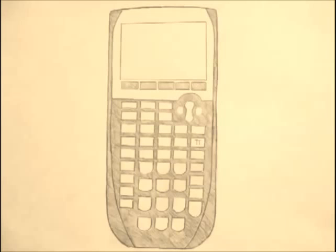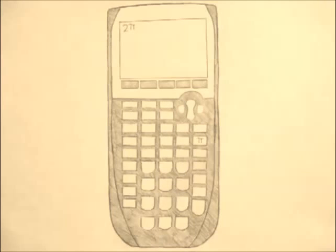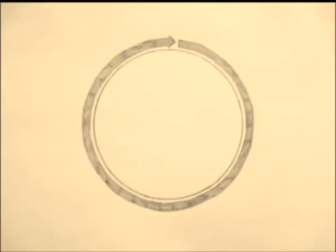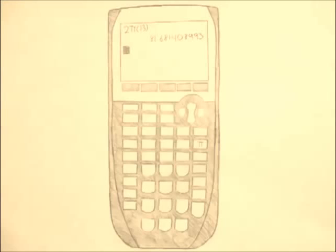Luckily, the number for pi was already programmed in, so all I had to do was type in 2 pi times 13 and press enter to find that the tire's circumference was approximately 81.681408993 inches.